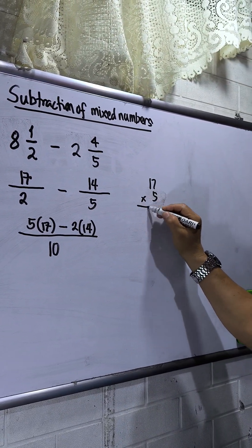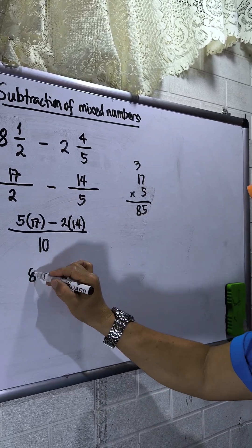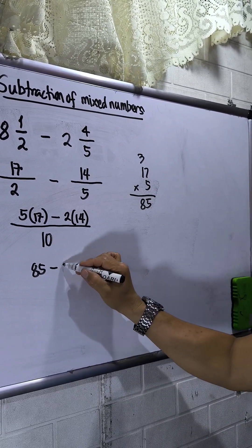So 17 times 5, this is 35, carry 3, 1 times 5, that will be 85. So 85. 2 times 14 is 28.